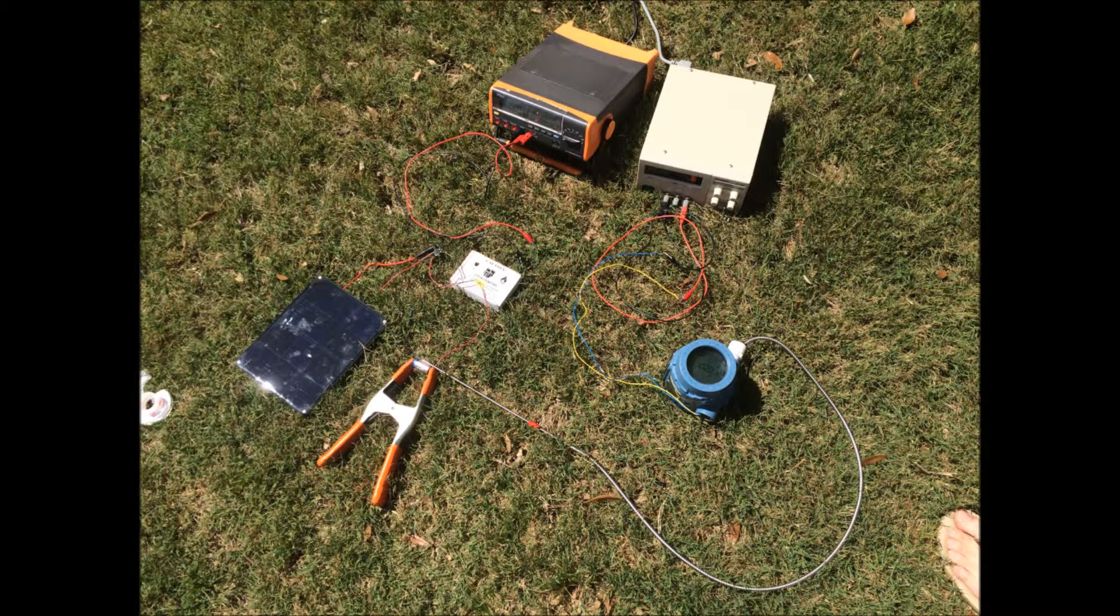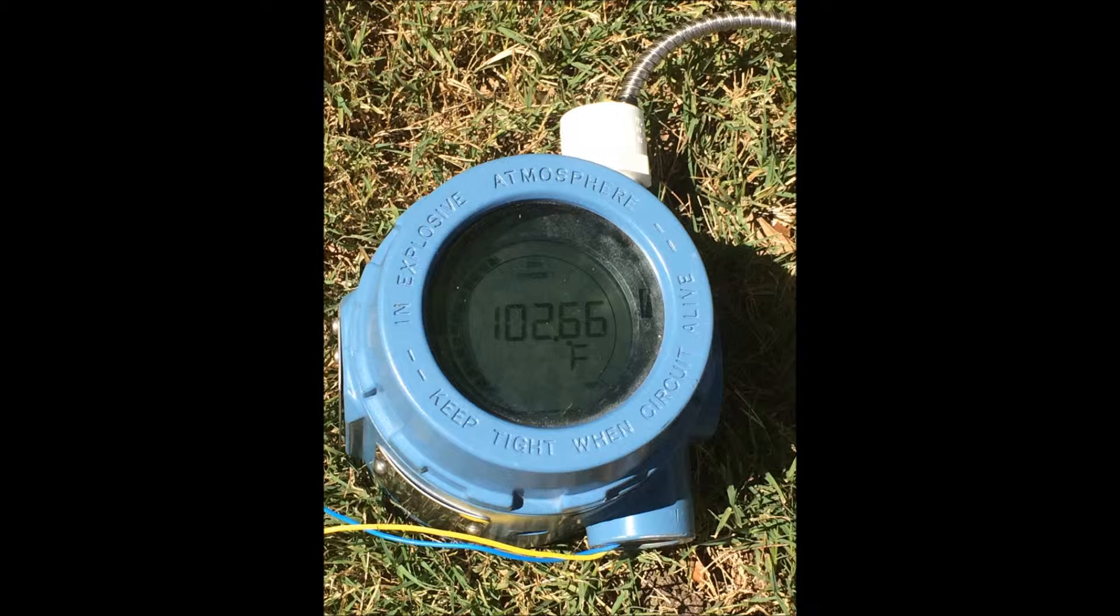All right, so this image shows the lithium-ion battery charging circuit being powered by a solar panel. The charging circuit takes voltage coming out from the solar panel and uses it to charge the battery, which in turn powers the circuit. We use an industrial temperature sensor to record the temperature of the battery in order to ensure that the battery did not overheat.